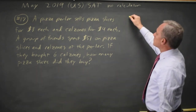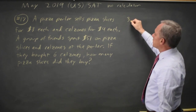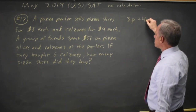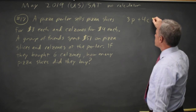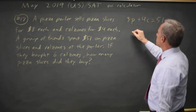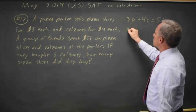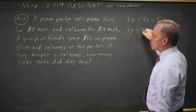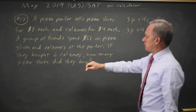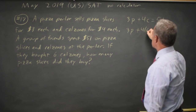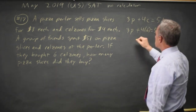So pizzas are $3 each times the number of pizza slices, and calzones are $4 each times the number of calzones, and that totals 51. So 3P plus 4 — we're told the number of calzones is 6 — equals 51.